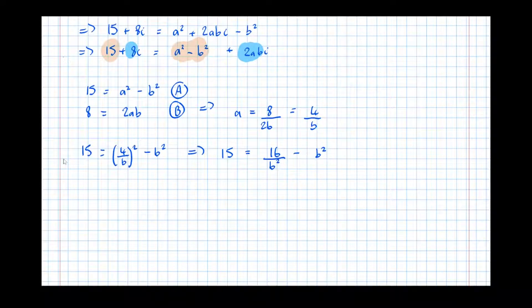Keeping on solving, so I'm going to times everything by b squared now to get rid of that denominator. So we get 15b squared equals 16 minus b to the 4. And hopefully now, by this point, you've noticed that's a stealth quadratic. So we've got b to the 4 plus 15b squared minus 16 equals 0.